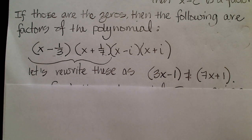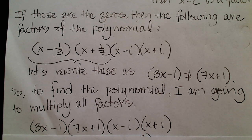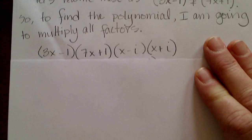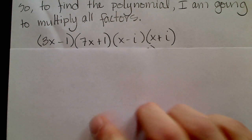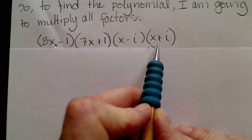So now what I'm going to do is I'm going to multiply those factors together. So here are my four factors that I'm going to multiply together. So I'm going to multiply these two together and these two together.